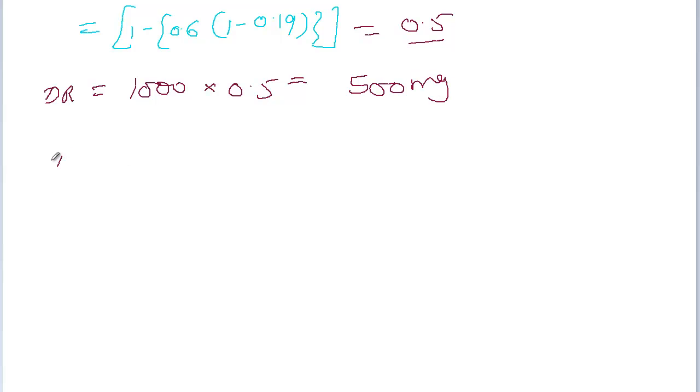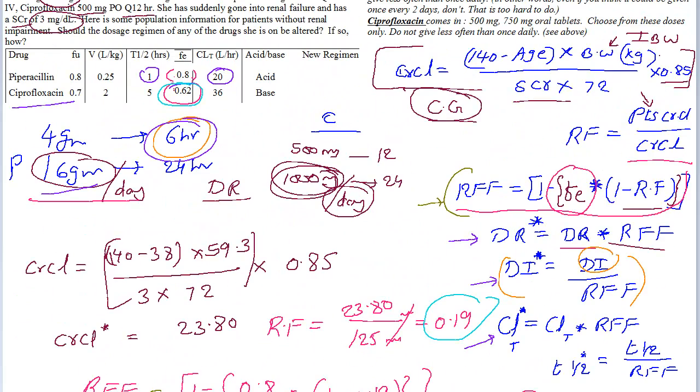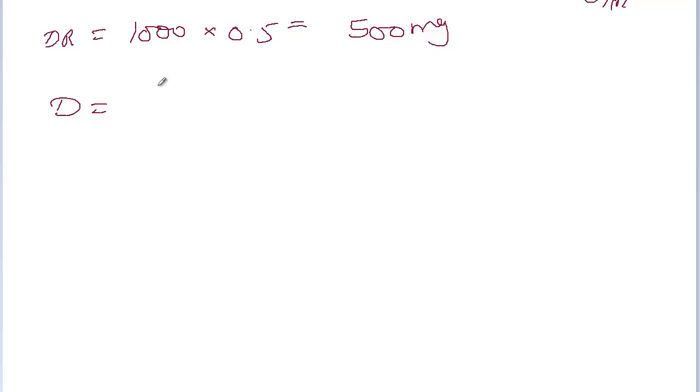The dose interval is 500 mg every 12 hours for a normal patient. So the interval is 12 hours. The dose interval of the normal patient divided by the renal fudge factor, that is 0.5, gives you 24 hours.